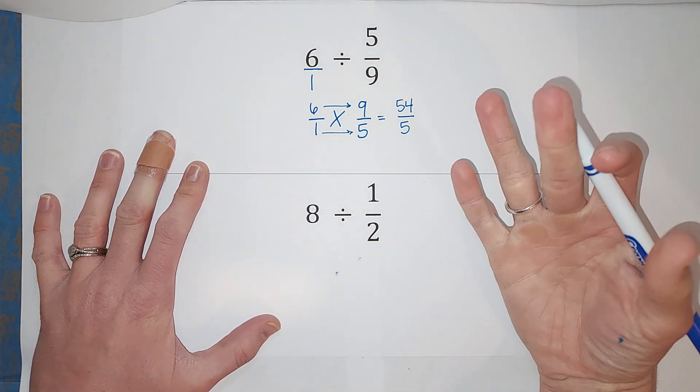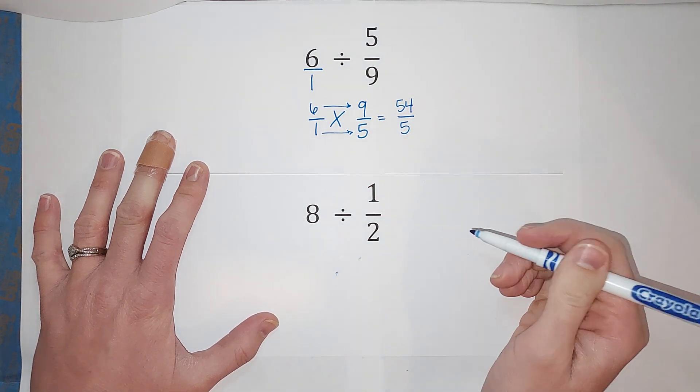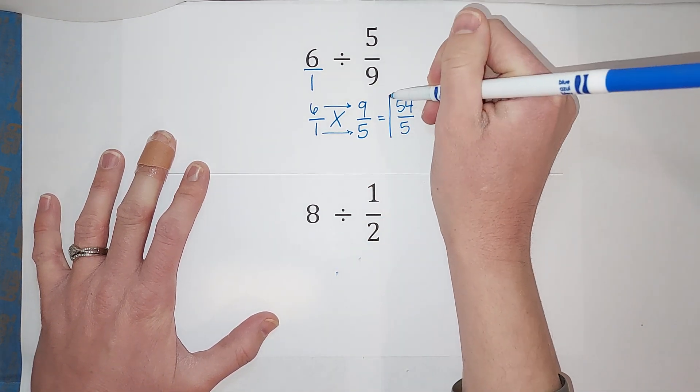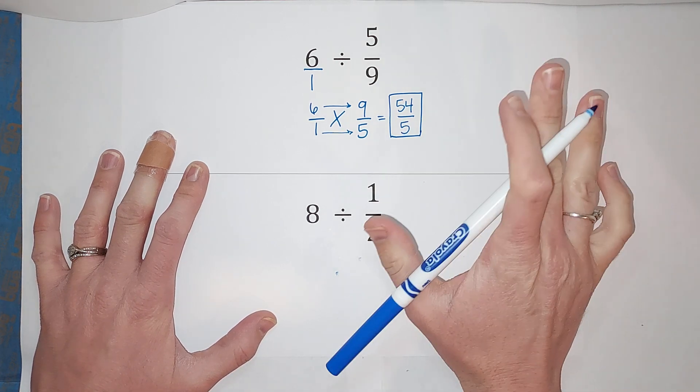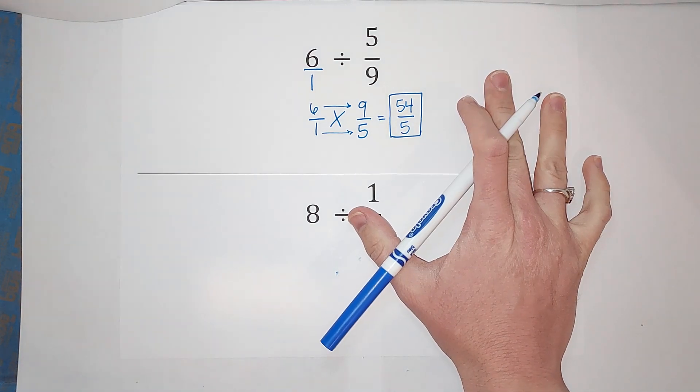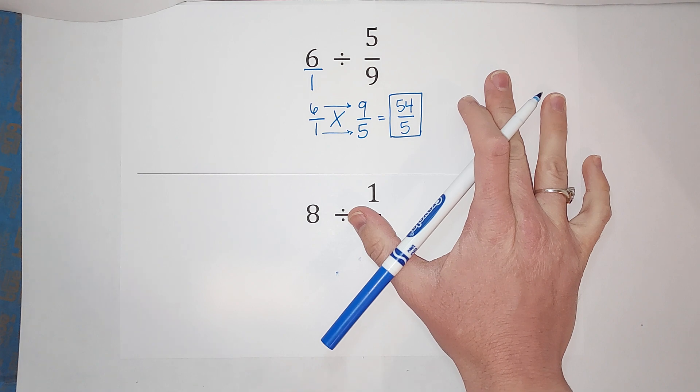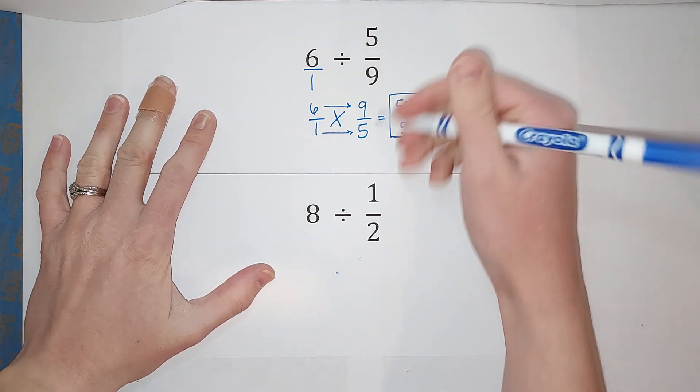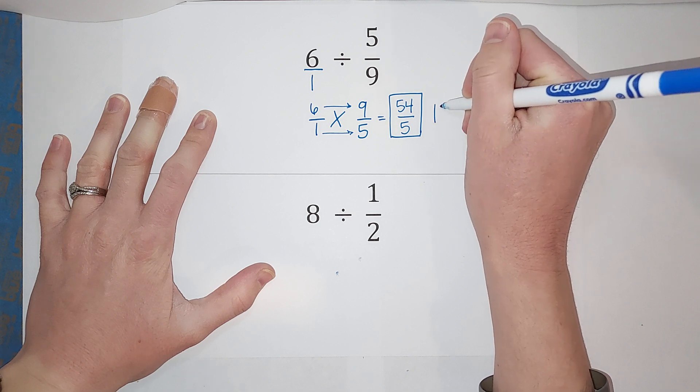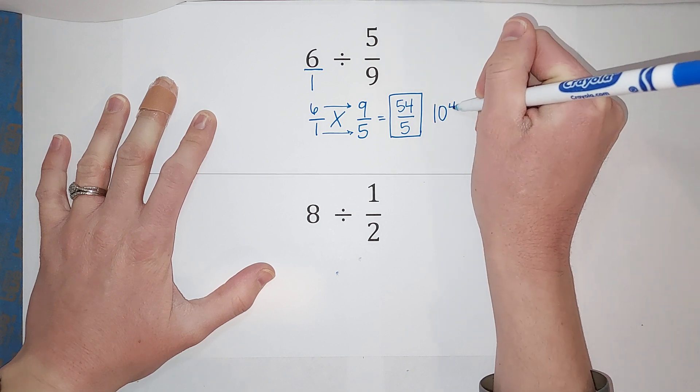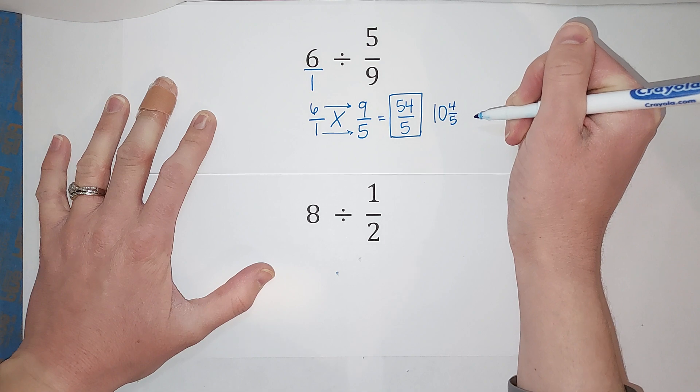Check if it can simplify. This cannot simplify—that's as simplified as it gets. Unless, let me take that back, if your teacher wants it as a mixed number. If they want it as a mixed number, five goes into 54 ten times, and then you have four left over.